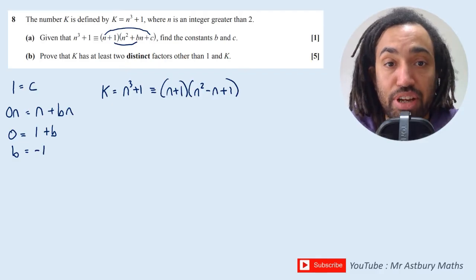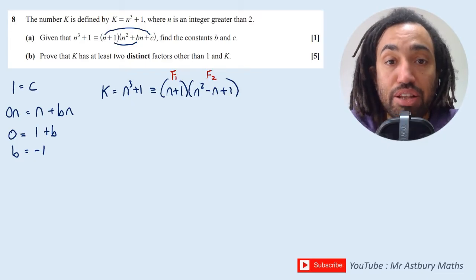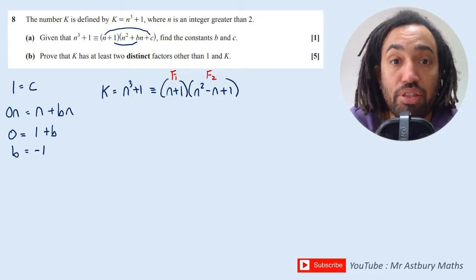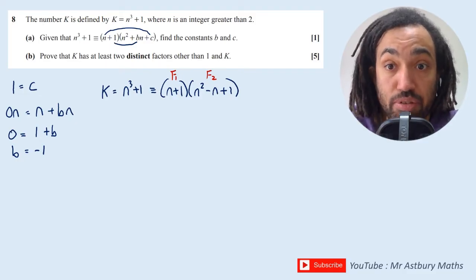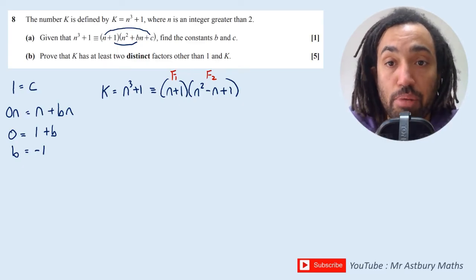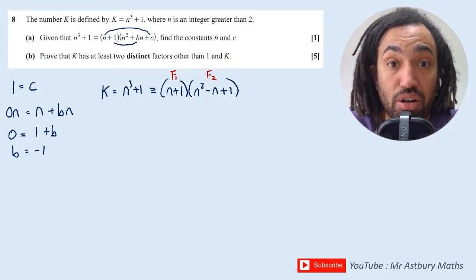So I'm going to label these factors factor 1 and factor 2, and the question has asked us to show that factor 1 and factor 2 are distinct, which means they're different from each other and they are not just 1 and k itself. So I'm going to assume that they are 1 and k and then prove by contradiction that that can't be the case.